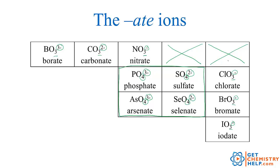One last pattern: if you look down a group, if you know chlorine is three oxygens and one negative (chlorate), then bromate is three oxygens and one negative, and iodate is three oxygens and one negative. For sulfur and selenium: if sulfate is four oxygens and two negative, then selenate is four oxygens and two negative. For phosphorus and arsenic: phosphate is four oxygens and three negative, and arsenate is four oxygens and three negative.